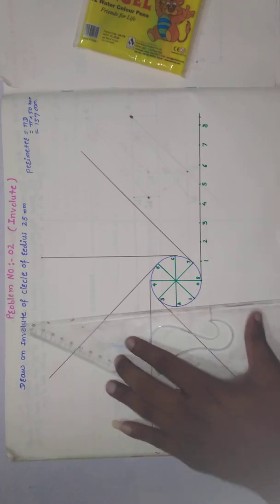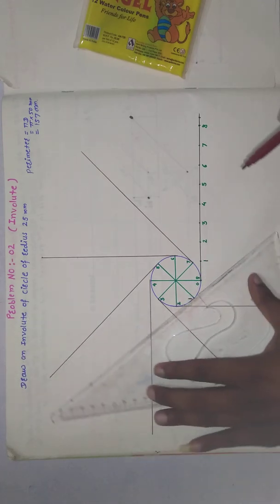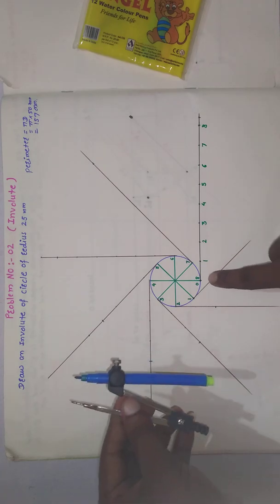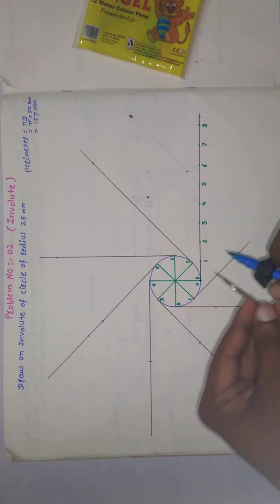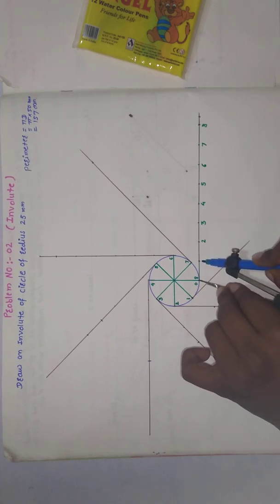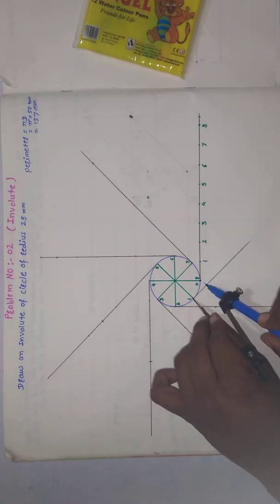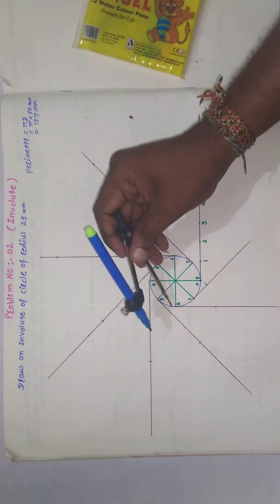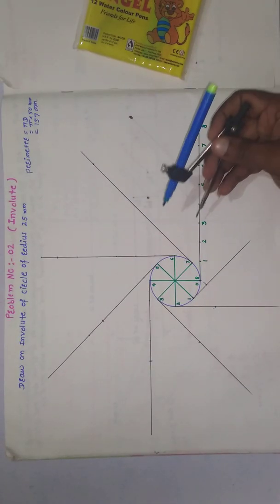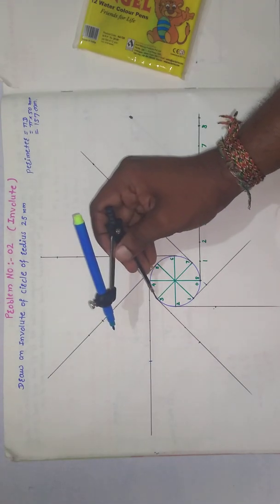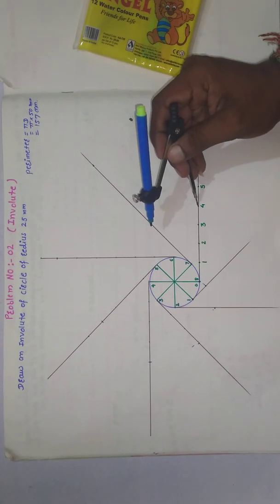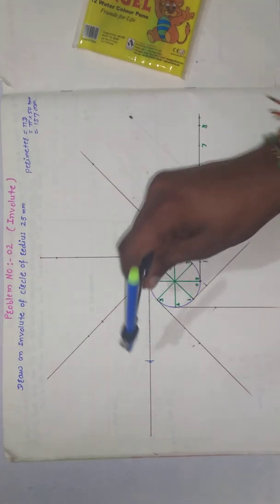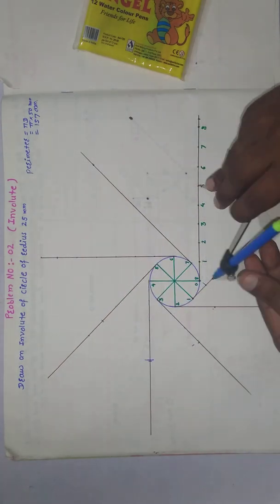Now cut all the distances on the tangent lines. Take the distance from zero to one and cut it on the tangent from point one. Then take zero to two and cut it from point two. Then zero to three and cut that distance at point three. Then take zero to four and cut that distance at point four.